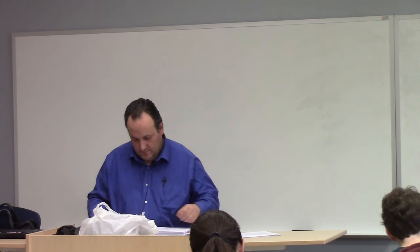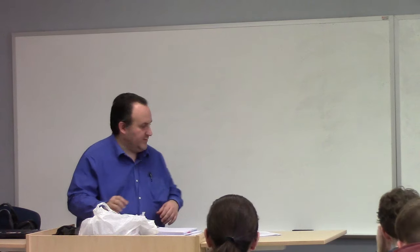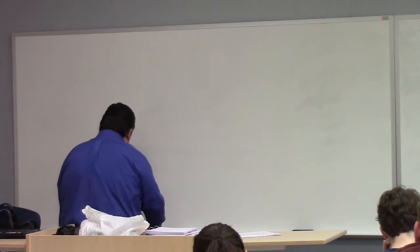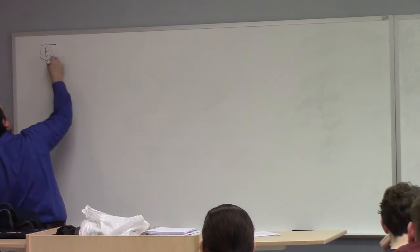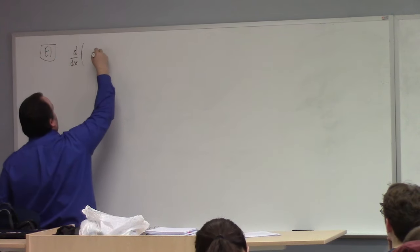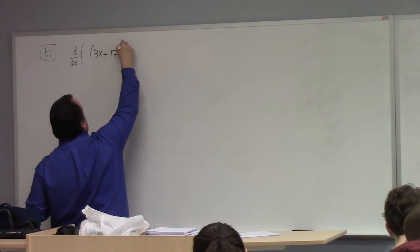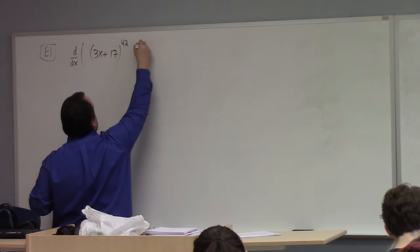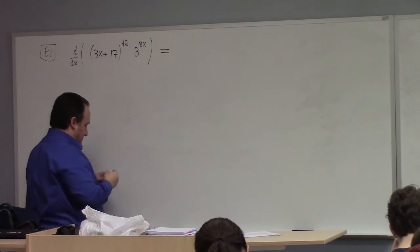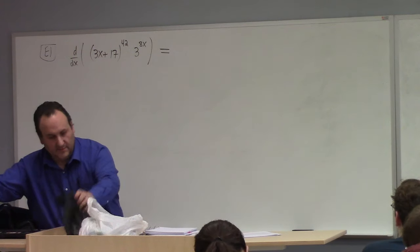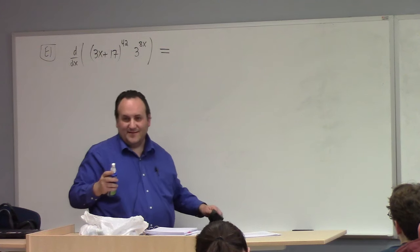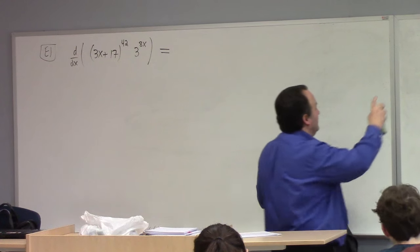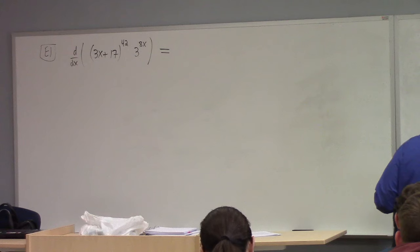All right, so you asked me about 149, part E? Sure, I'll work a similar but different problem. Example 1: suppose we're up against the dreaded (3x + 17)^42 times 3^(8x). How would you differentiate this? It's similar to what you asked about, just uglier. If you can do this one, you should be able to do the one you asked me about.